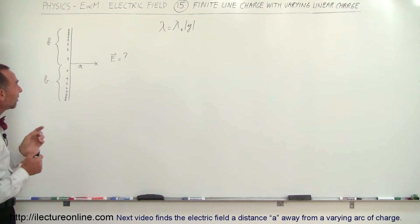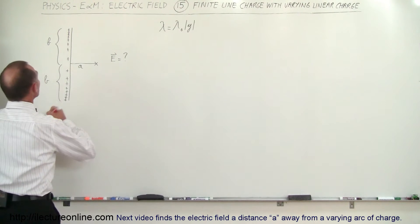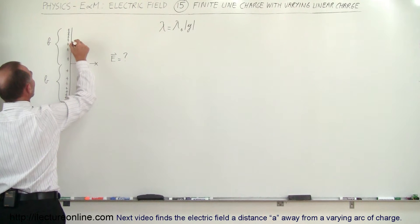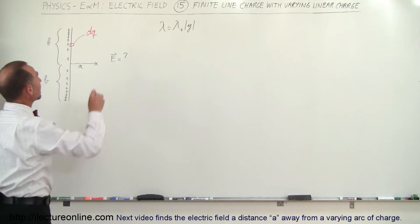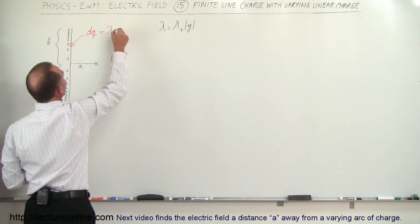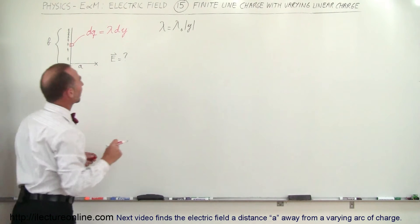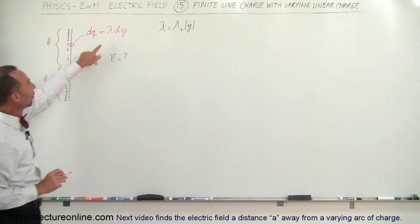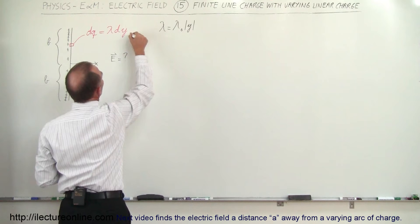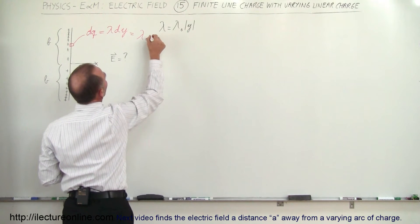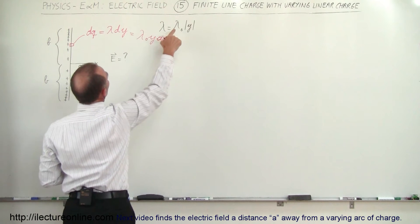Since the linear charge density is not constant, we're going to have to integrate. We need to find a small dQ somewhere along the line. That dQ is equal to the charge density times the length of that small piece, which is dy (using y for the vertical direction). Since the charge density lambda equals lambda-sub-naught times y, we can write dQ as lambda-sub-naught times y times dy.